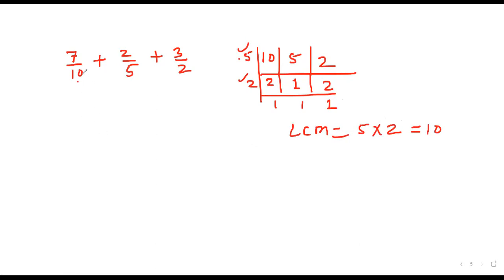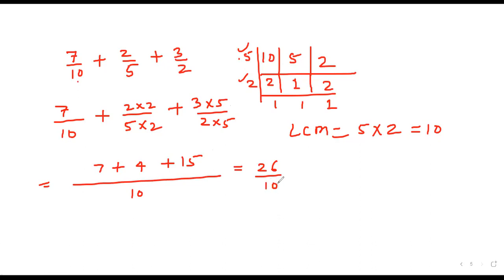So here we make each denominator equal to 10. So here 7, it is already 10. But here to make 5 as 10 we multiply it by 2 and 2 by 2. And here 3 multiplied by 5 and 2 multiplied by 5. Now all denominators are 10. So 7 plus 4 plus 15. Now we find the sum. It will be 26 divided by 10. Now question for you.